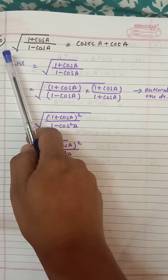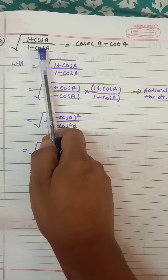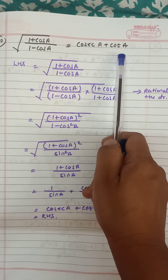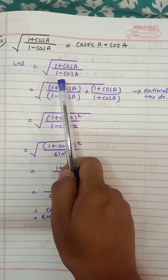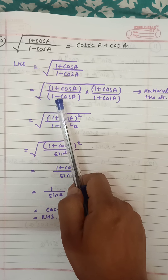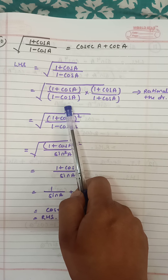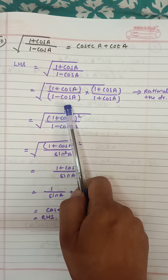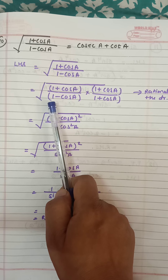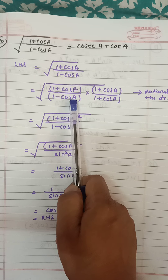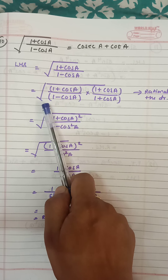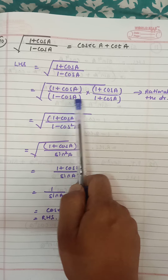Question number 10: square root of (1 plus cos a) upon (1 minus cos a) is equal to cosec a plus cot a. Left hand side is written. In this type of question we have to rationalize the denominator — since the denominator is 1 minus cos a, we multiply and divide by 1 plus cos a.